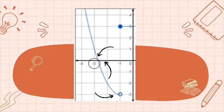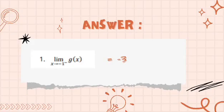So, the negative 1 from the x-axis is here. From negative 1, we find the graph from the left side, which is this. This graph approaches negative 3. So, the limit of g of x as x approaches negative 1 from the left side equals negative 3.